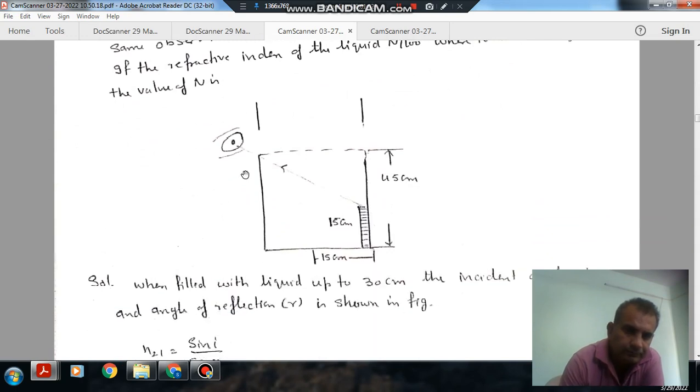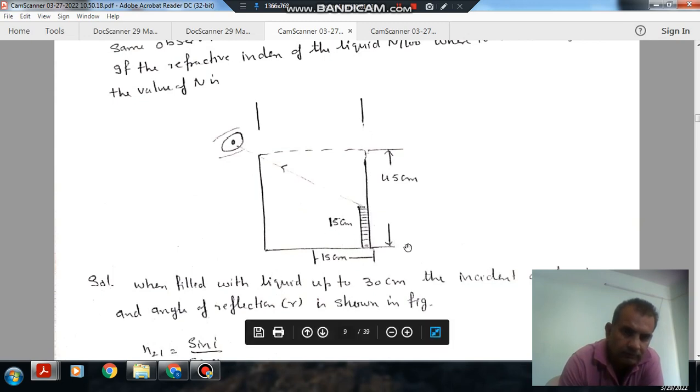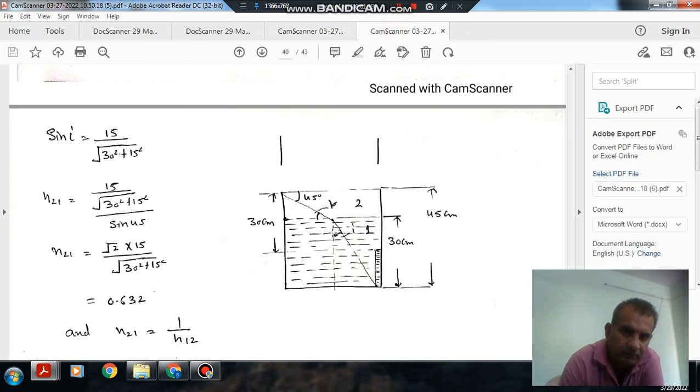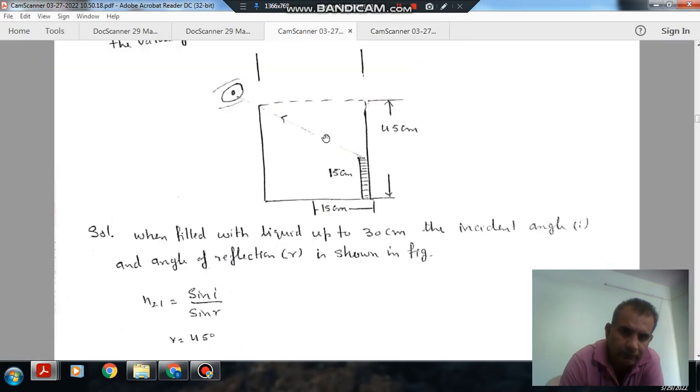So this is your hole and this height is 45 cm and this is 50 cm. When the jar is filled up to 30 cm, the angle is I and the angle of reflection is R. This is for I and this reflection angle is R. And this R is equal to 45 degrees.